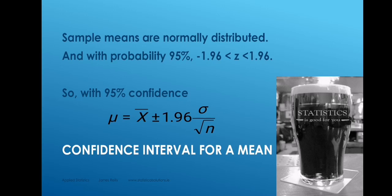In order to address this, we're going to use two things that we know already. The first thing is that sample means tend to be normally distributed. That's useful to know, especially because of the second thing: we know how to associate probabilities with a normal distribution. We know, for example, that 95% of a normal distribution falls between the z-scores minus 1.96 and plus 1.96. So with 95% confidence, a z-score will not exceed plus or minus 1.96.